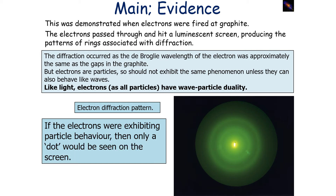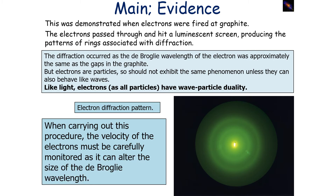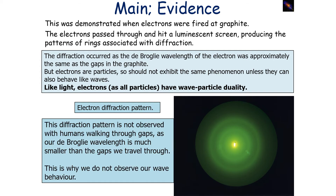This is conclusive proof that in this example, electrons must be exhibiting wave behaviour. If the electrons were exhibiting particle behaviour, only a dot would be seen on the screen. When carrying out this procedure, the velocity of electrons must be carefully monitored so that we can alter the size of the de Broglie wavelength, ensuring the de Broglie wavelength is similar to the gap size in the graphite so we can observe the diffraction pattern.